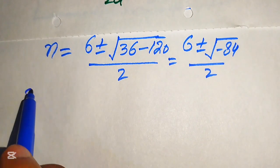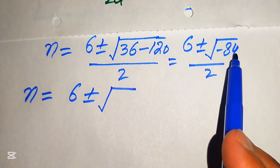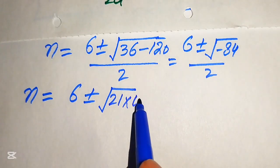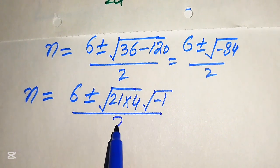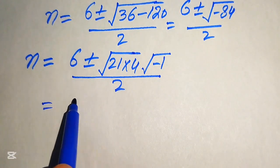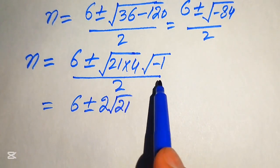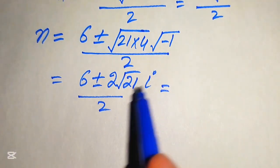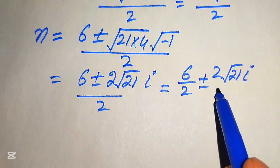We break down minus 84: we write it as 6 plus or minus the square root of negative 1 times 4 times 21, divided by 2. The square root of 4 is 2, and the square root of minus 1 is iota. So we get 6 plus or minus 2 times square root of 21 times iota, divided by 2.